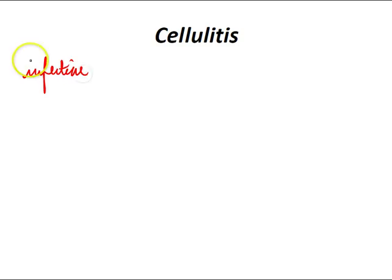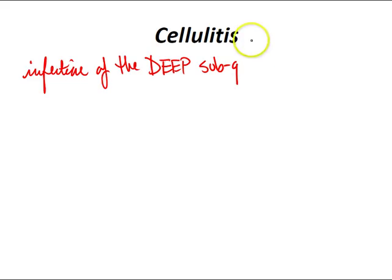Cellulitis is an infection of the deep subcutaneous tissue of the skin. It can be caused by normal skin flora or by exogenous bacteria, and often occurs where the skin has previously been broken — cracks, cuts, blisters, burns, insect bites, surgical wounds, or sites of intravenous catheter insertion. Group A streptococcus and staphylococcus are the most common bacteria, which are part of your normal skin flora but cause infection once the skin is broken.